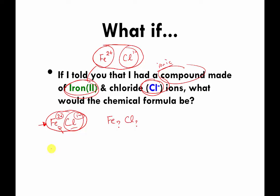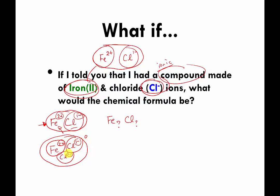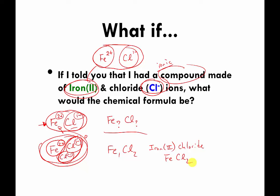If I had one iron at plus two and one chloride at minus one, those do not cancel completely — this is plus two, that's only negative one. I need two chlorides to cancel out one iron. So with a single iron and two chlorides, the entire blob has a total electrical charge of zero: plus two from the iron and two times minus one from the chlorides. So the formula for iron(II) chloride is FeCl₂ — one iron so just Fe, and two chlorides so Cl₂.